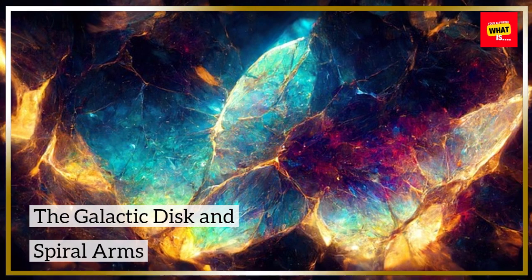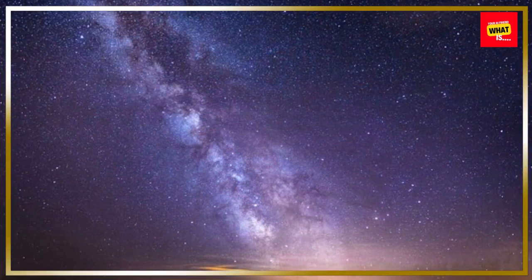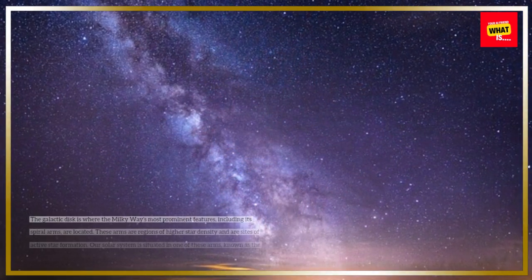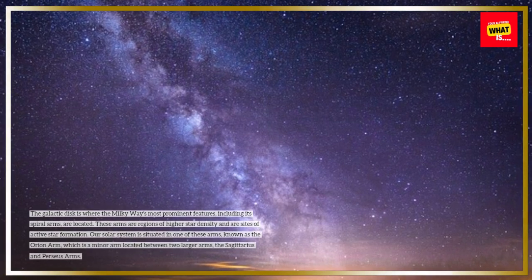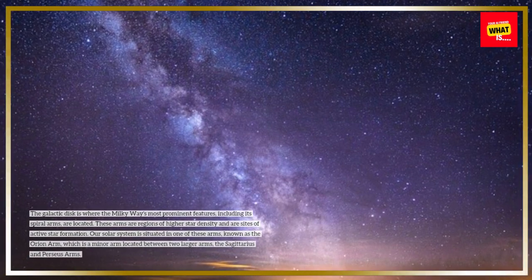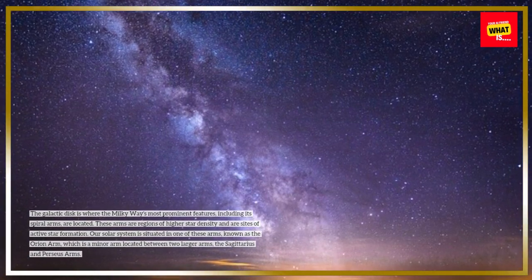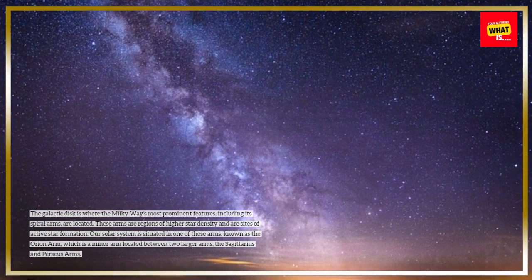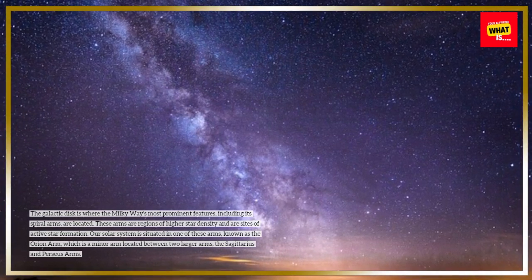The galactic disk and spiral arms. The galactic disk is where the Milky Way's most prominent features, including its spiral arms, are located. These arms are regions of higher star density and are sites of active star formation.